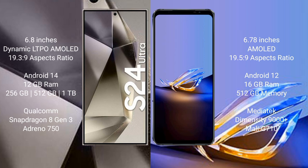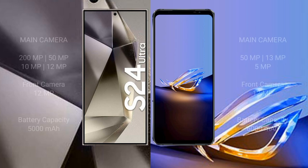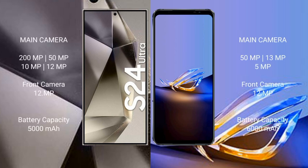Samsung Galaxy S24 Ultra comes with 12GB RAM and up to 1TB internal storage, powered by the Qualcomm Snapdragon 8 Gen 3 processor with Adreno 750 GPU. Asus ROG Phone 6D Ultimate comes with 16GB RAM and 512GB internal storage, powered by the MediaTek Dimensity 9000 Plus processor with Mali-G710 GPU.